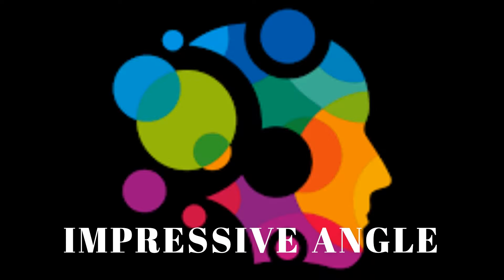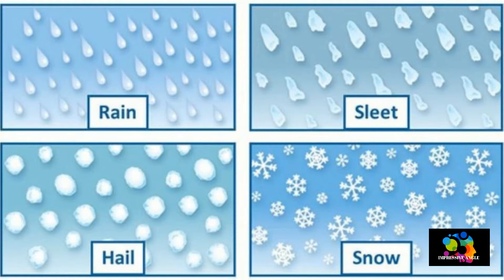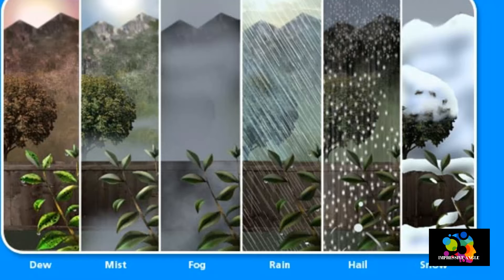Hello everyone, this is Mansa. Welcome to Impressive Angle. Have you ever wondered how does the snow, sleet, rain, hail, etc. form in the atmosphere? Come on, let's discuss them in detail.